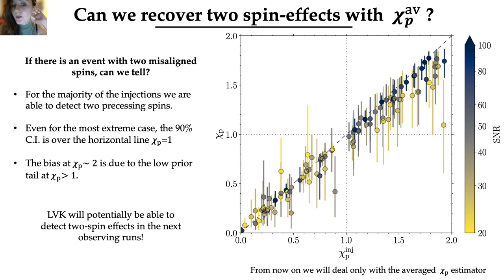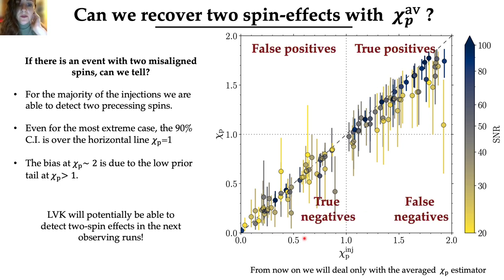So following this procedure, we did 100 injections and in this plot we report the recovered value of χp as a function of the injected one and the diagonal dashed line in the background represents the ideal line where χp injected is equal to the recovered one. This plot can be divided in four distinct regions, the region of true negative, false positive, true positive and false negative. Let's first focus on the region of true negative where we inject and recover a value of χp that is lower than 1. Here all the scatter points are following the trend of the dashed diagonal line in the background meaning that we are able to recover the value that we inject in the signal.